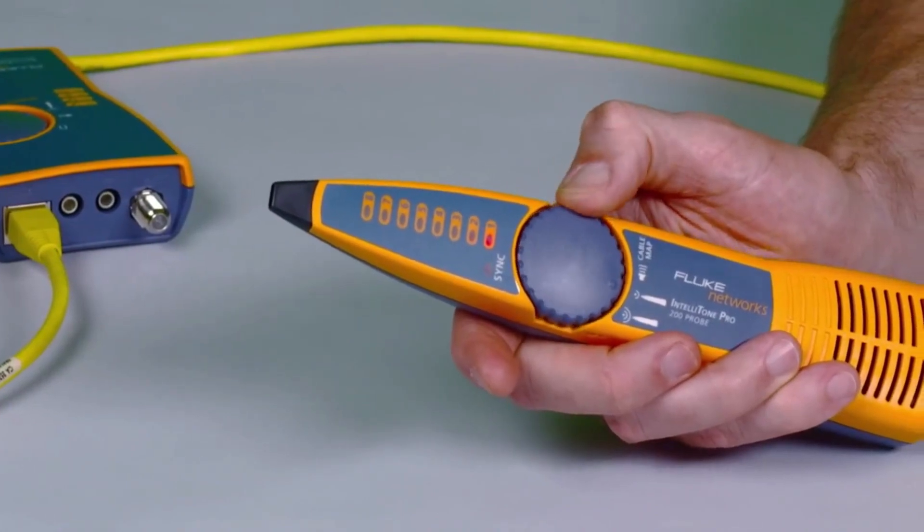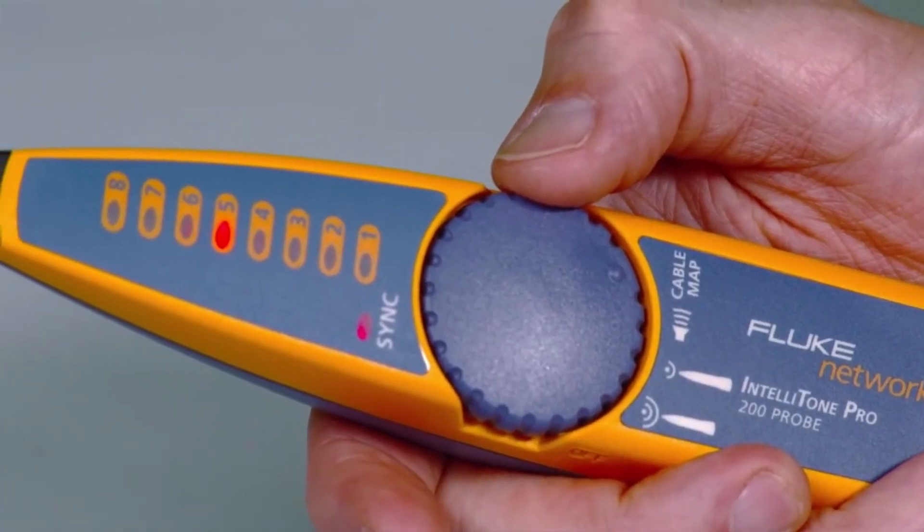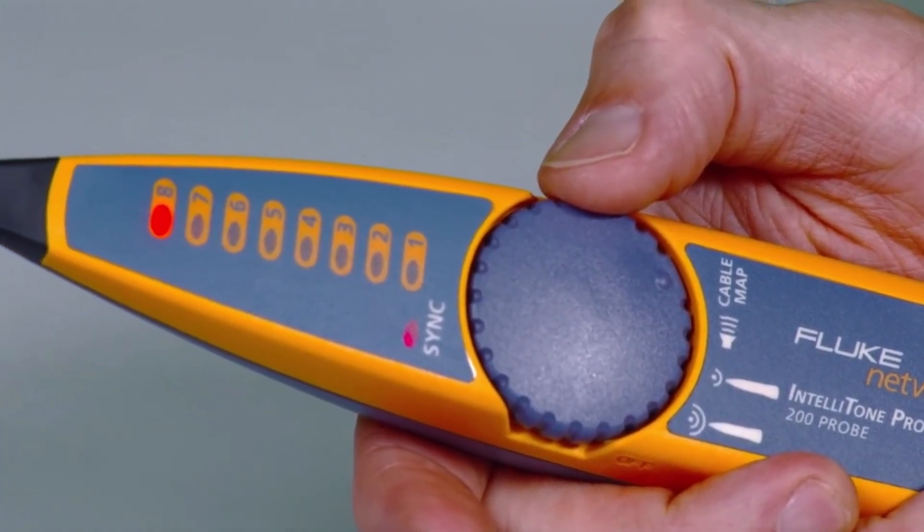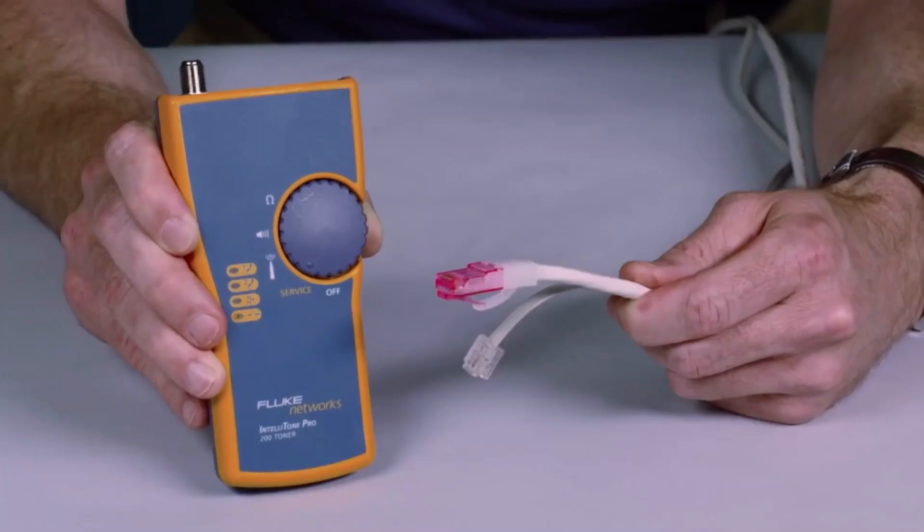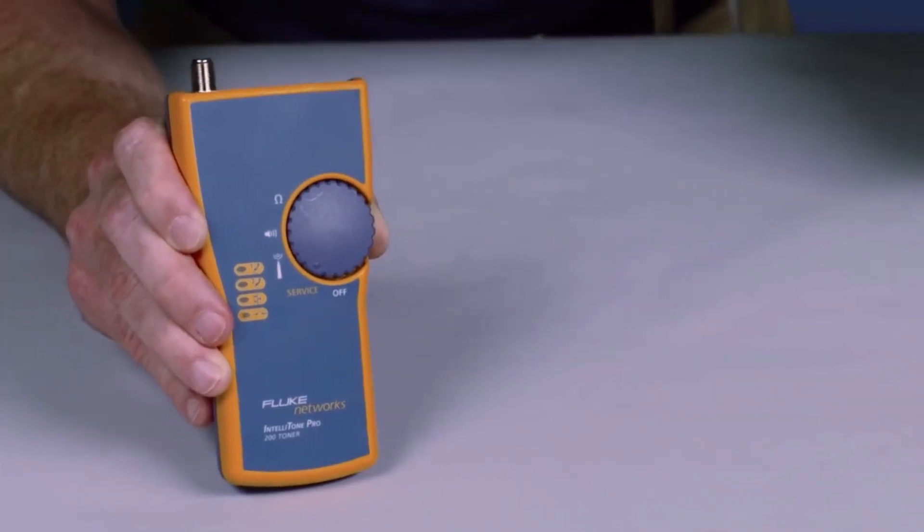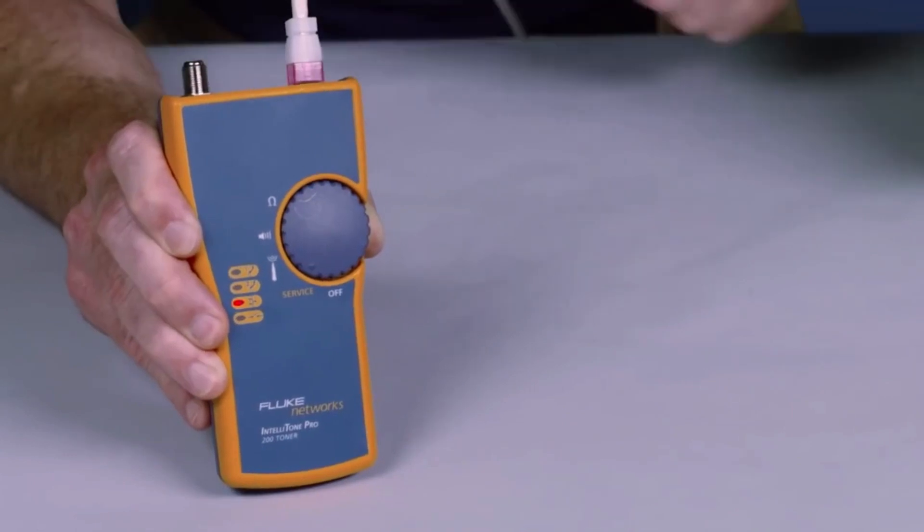The toner and probe feature a thumb wheel ergonomic design and status indicators give easy-to-read feedback. The mystery of identifying cable services becomes history. Know if it's a data, telco, or dead jack instantly.